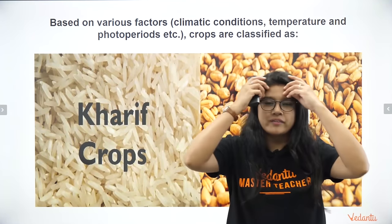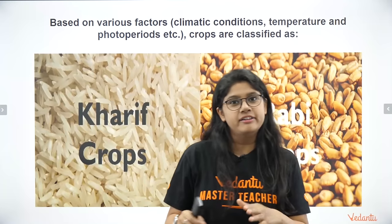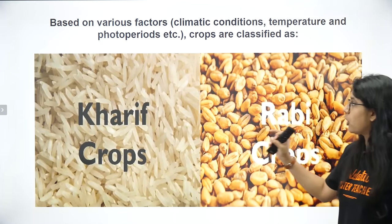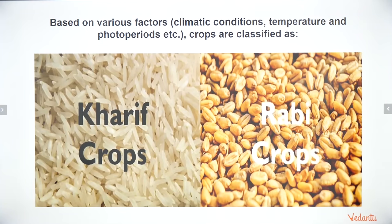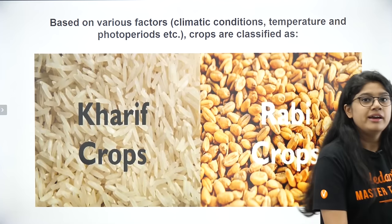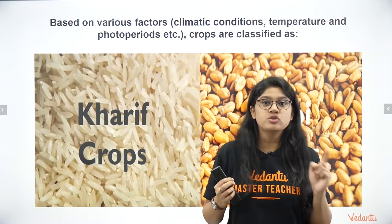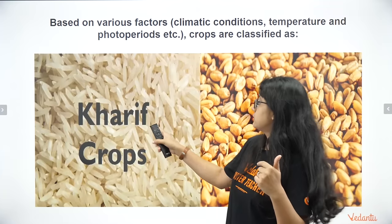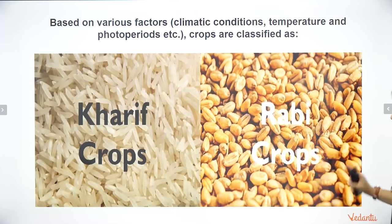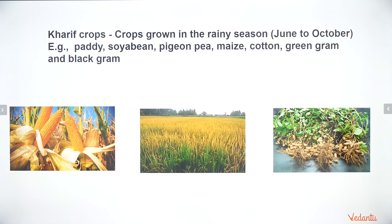A very basic topic we've been covering: Kharif crops and Rabi crops — two different types of crops based on seasons. Kharif crops are sown in the hot/rainy season from June to October; rice is an example. Rabi crops are sown in November and harvested in April. These are the two important classifications of crops.